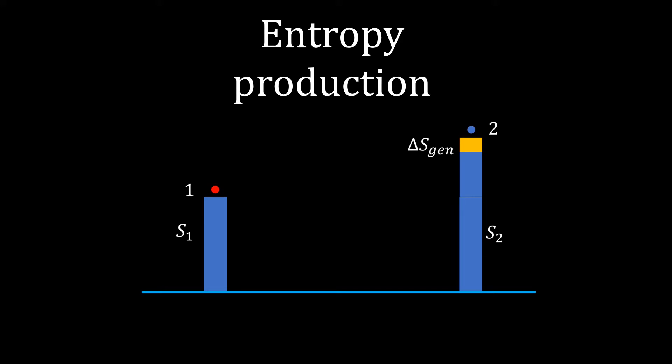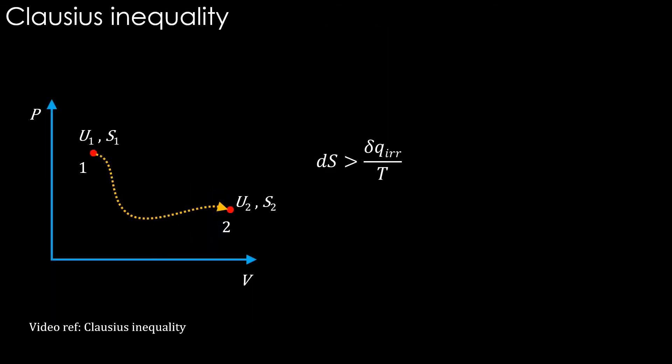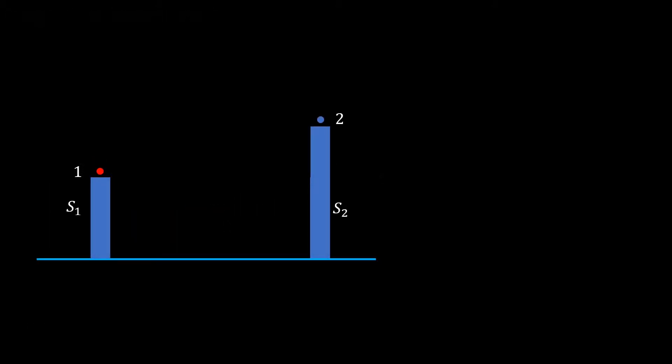We will see about entropy production in this video. We have arrived at Clausius inequality in an irreversible process. We have seen that the entropy of two states is S1 and S2.